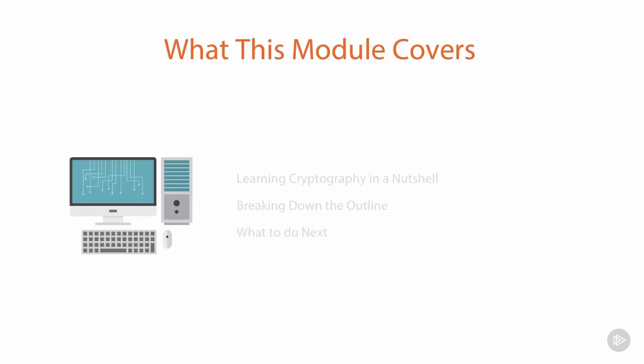We're going to start off by giving you the path on how to learn cryptography, and it's pretty extensive. We're going to have an extensive list of things for you to learn — everything from what's a hash, how do we protect integrity, why do we protect integrity, how do we encrypt and decrypt, what are some of the different ways that we do this — all the way through things like public key infrastructure, PKI, and how certificates work. So you're going to get all the information you need.